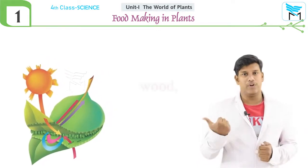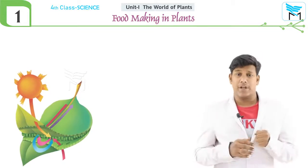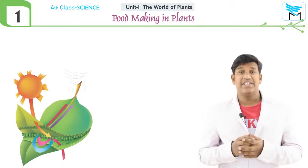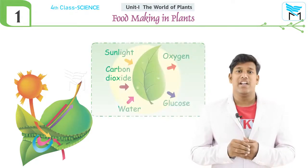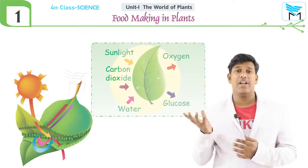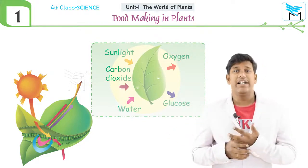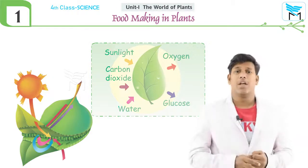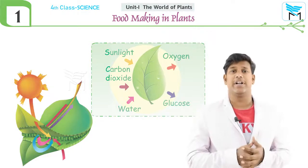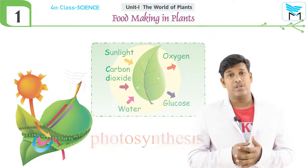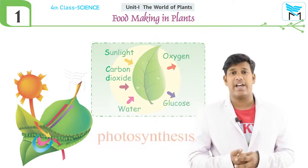Can you say where plants prepare their own food? Plants prepare their own food in the leaf. The leaf is called the food factory of a plant. Plants prepare food inside the leaf. The process by which these green leaves prepare their food is known as photosynthesis. For photosynthesis, the leaf requires carbon dioxide, sunlight, and water.